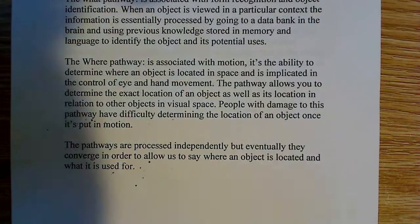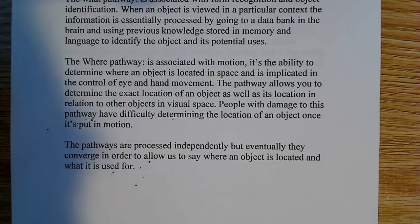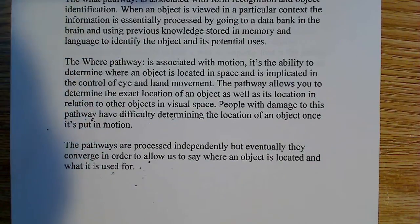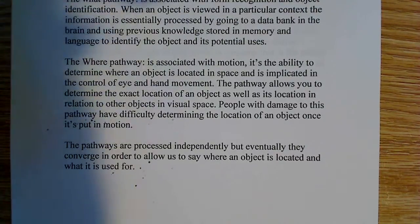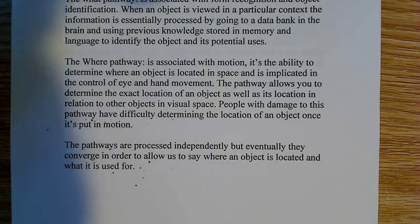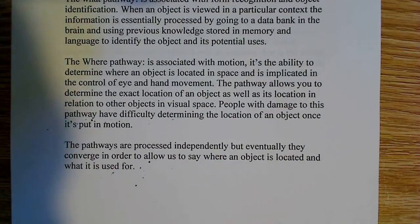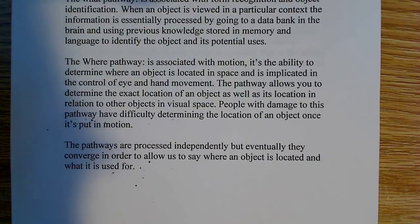The two pathways are processed independently, but eventually they have to converge. That makes total sense, because we need both the information from the 'what' pathway — form recognition and object identification — and from the 'where' pathway, which tells us where the object is located in space. We have to make sense of both at the same time. When these two pathways converge, it allows us to say not only where the object is located, but what it is and what it's used for. That's really important, and it's something we do every day.